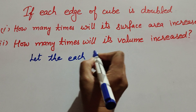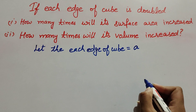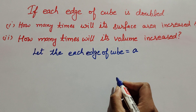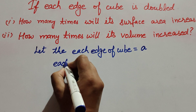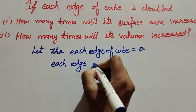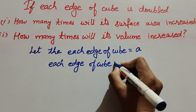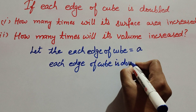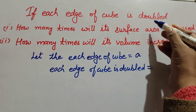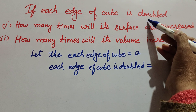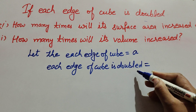Let each edge of the cube be 'a'. When each edge of the cube is doubled, the new edge is equal to 2a.